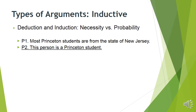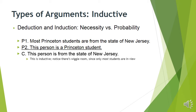Consider this other argument: most Princeton students are from the state of New Jersey; this person — call her Ashley — is a Princeton student; therefore, this person is from the state of New Jersey. Sounds pretty reasonable, but you're only given it with probability — it doesn't guarantee the conclusion is true, so it's inductive. There's a little bit of wiggle room. You could find a student who's not from New Jersey, and it doesn't mean the premises are bad — your support's still great.